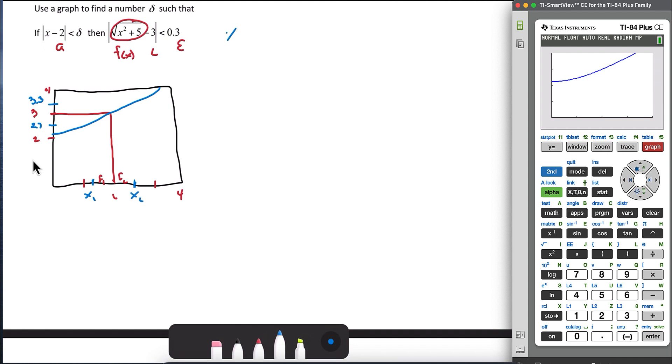Next, let's focus on finding x₁. When y is equal to 2.7, we're looking at this point here, we're finding x₁. So when y is equal to 2.7, let's plug that into the equation. The square root of x² plus 5 and solve. So here I'll go to the calculator to help.